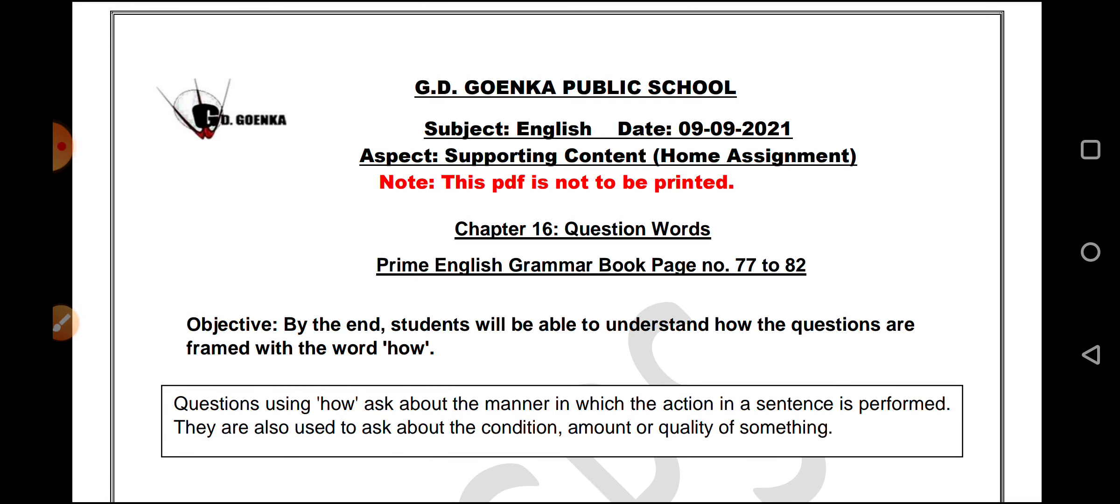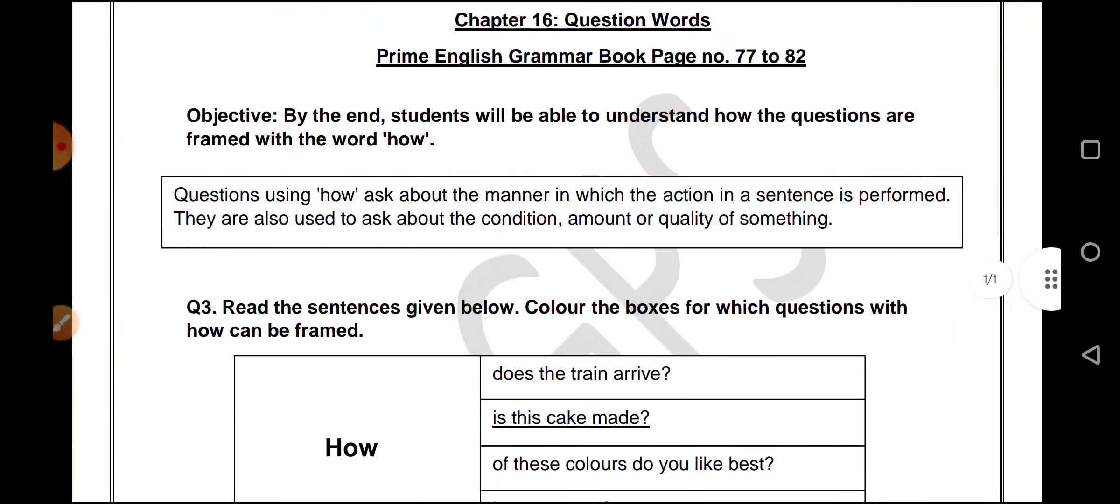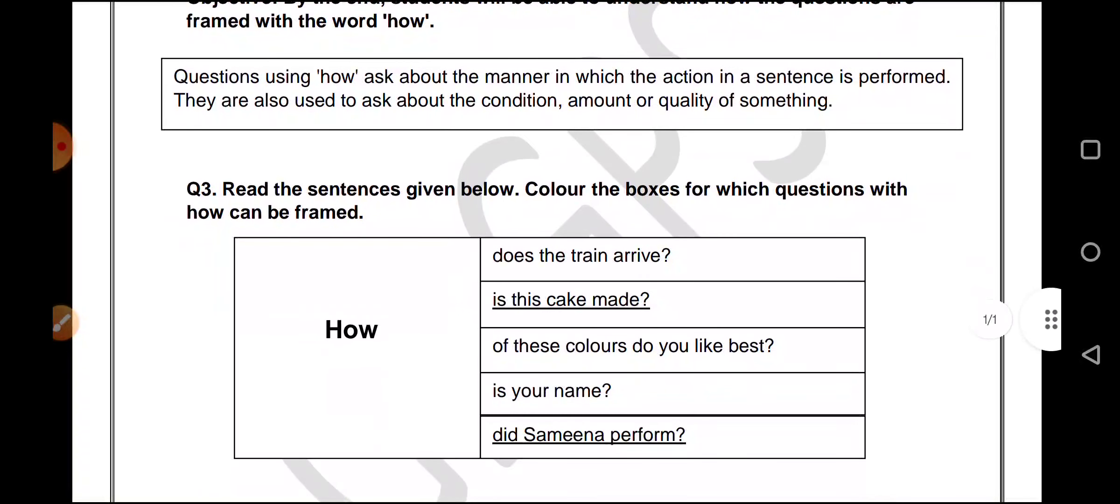Questions using how ask about the manner in which the action in a sentence is performed. They are also used to ask about the condition, amount or quality of something. So now that we know where how is used, let us try answering a few questions related to it.